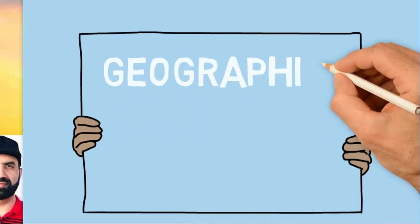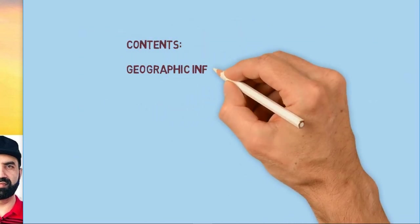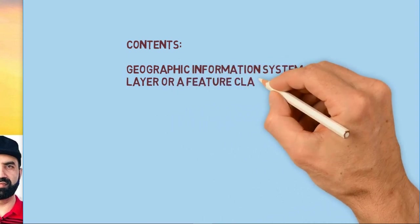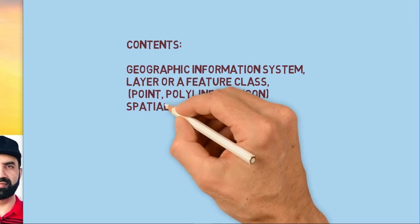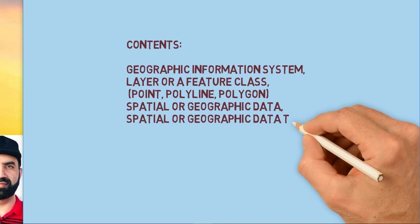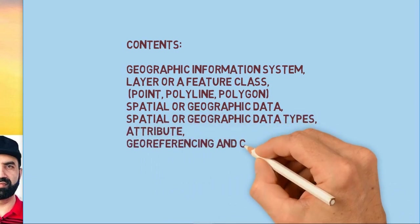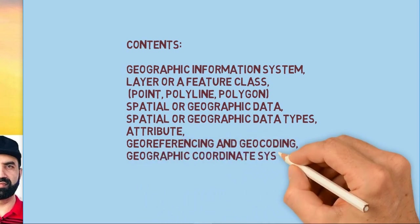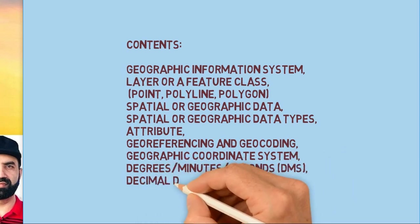Hi viewers, this is Khalid Mehmod with a video on Geographic Information Systems. In this video you will learn about GIS layers or feature classes—point, polyline, polygon—you will know about spatial or geographic data and its types, as well as attributes, geo-referencing, geocoding, geographic coordinate systems, degrees minutes seconds, and decimal degrees.